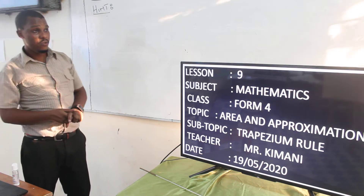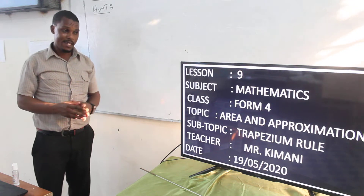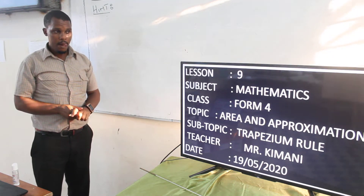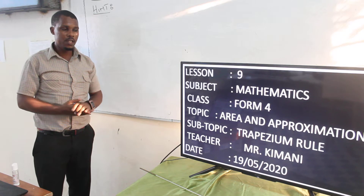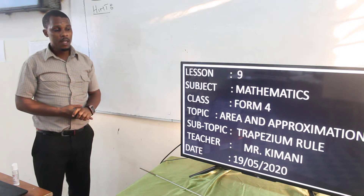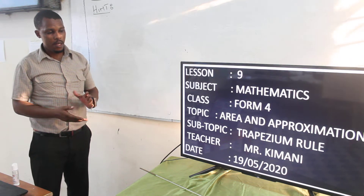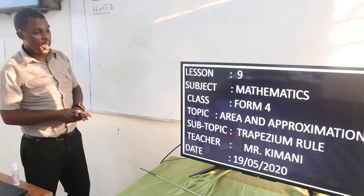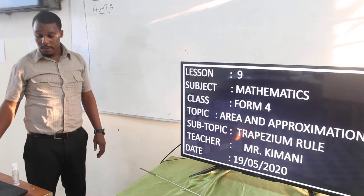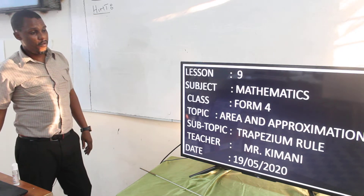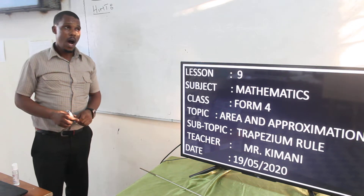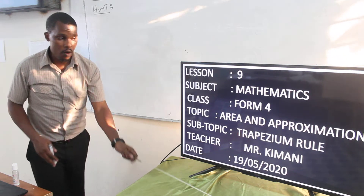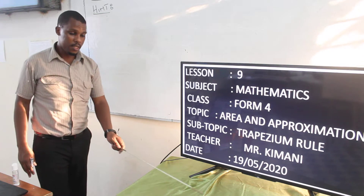Today I am going to continue from where we stopped last time. Remember, last month we were discussing about longitude and latitude. Then I introduced you to chapter number 8, which is concerning the area and approximation. And I said there are different ways of approximating the area of a given object.